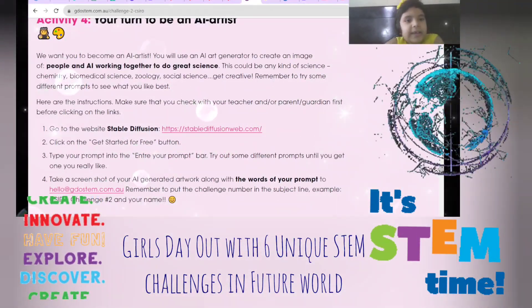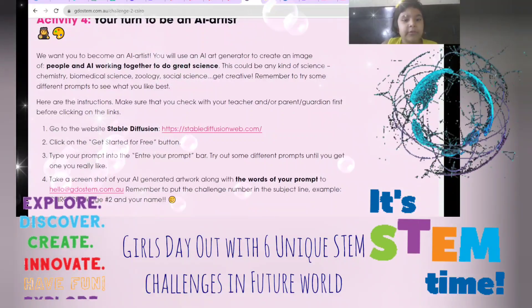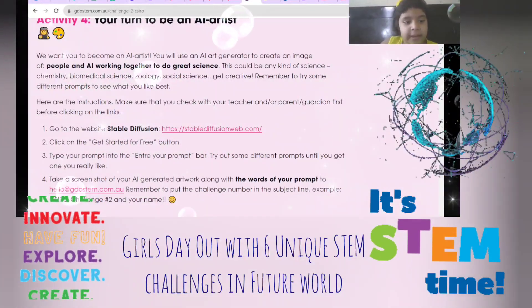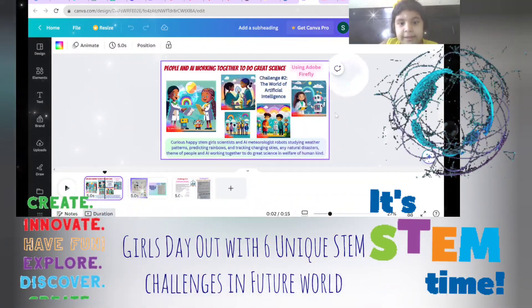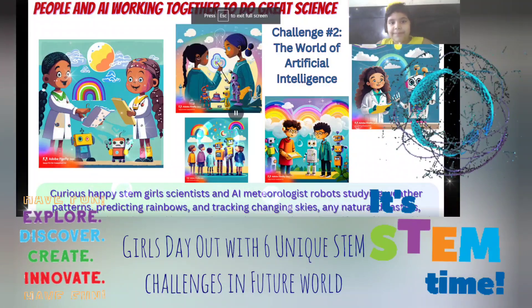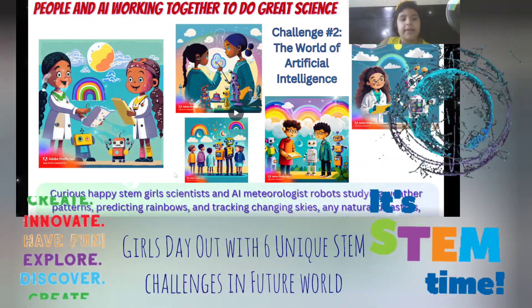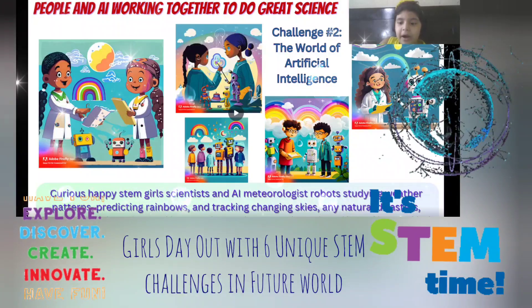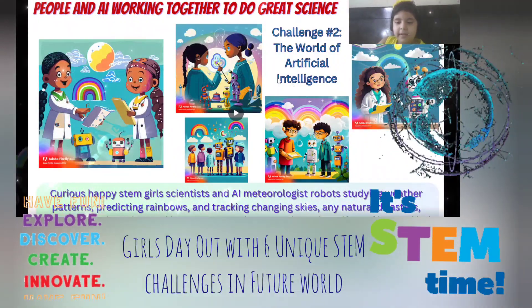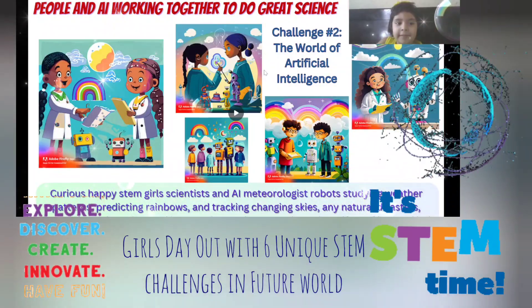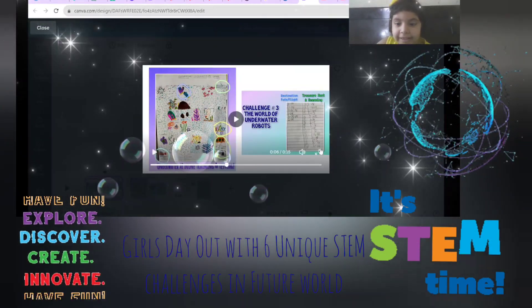For the challenge, we had to make images of people from the AI team working together to do great science. You can try different prompts. Here are some of my images — they are doing great science, advanced work in the rainbows, protecting people when disasters come, so they can give humans a warning before it's too late.